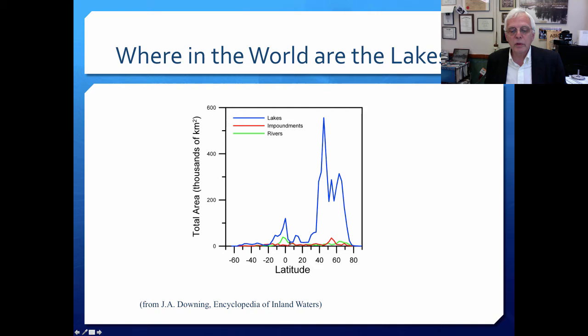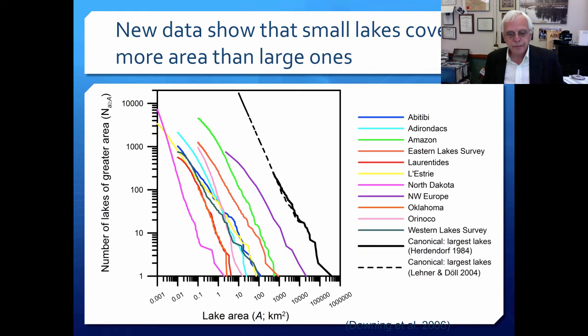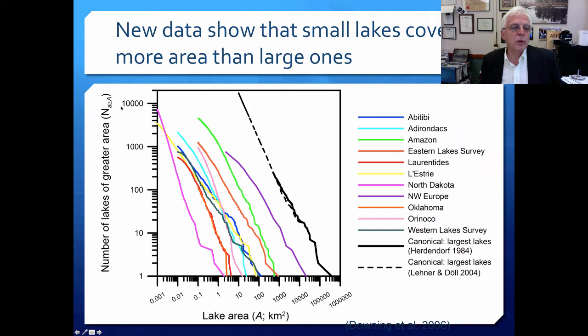Impoundments — things like reservoirs — tend to be in the agricultural areas of the world. River area is more evenly distributed, but there are a lot of rivers around the equator where the land is old, relatively unglaciated, and has a lot of excess precipitation. New data are showing us that small lakes cover more area than large ones in the world. This is how we characterize area distributions of lakes worldwide.